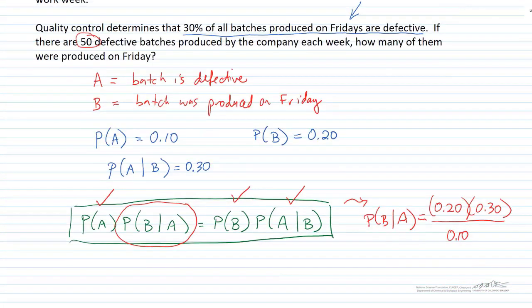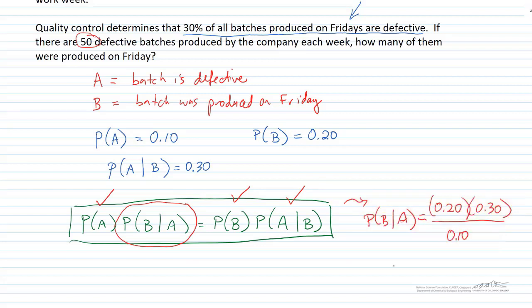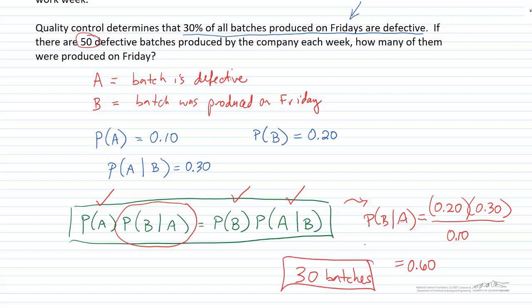When we put these numbers into the equation, we find that P(B|A) — the probability a batch was produced on Friday given it was defective — is equal to 60%. That means 60% of all defective batches were produced on Friday. Multiplying 60% by 50, we get 30 batches. So 30 of those 50 defective batches were produced on Friday. Hopefully you learned a little more about the multiplication rule in this screencast.